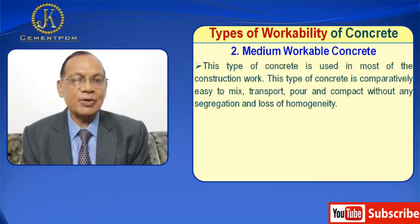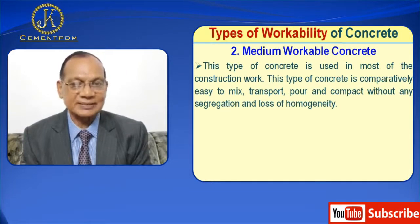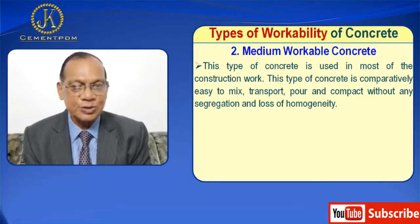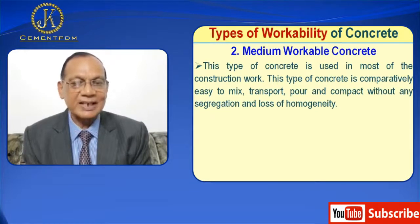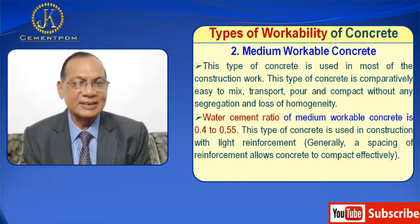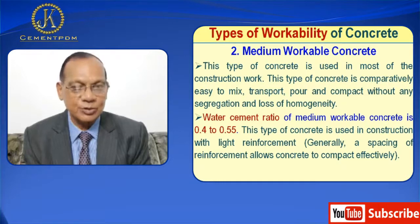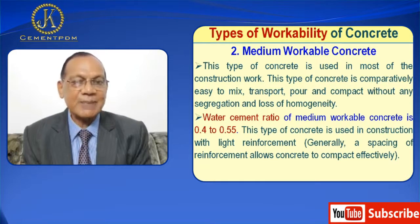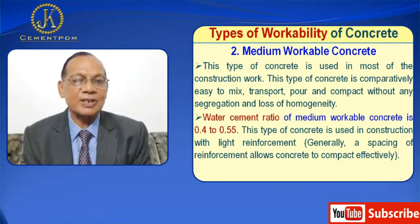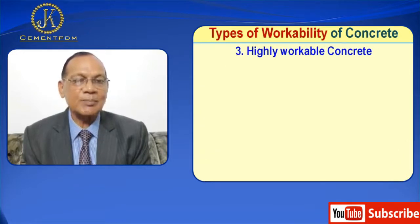Second is medium workable concrete. This type of concrete is used in most construction work. It is comparatively easy to mix, transport, pour, and compact without any segregation and loss of homogeneity. Water cement ratio of medium workable concrete is 0.4 to 0.55. This type of concrete is used in construction with light reinforcement, where spacing of reinforcement allows concrete to compact effectively.